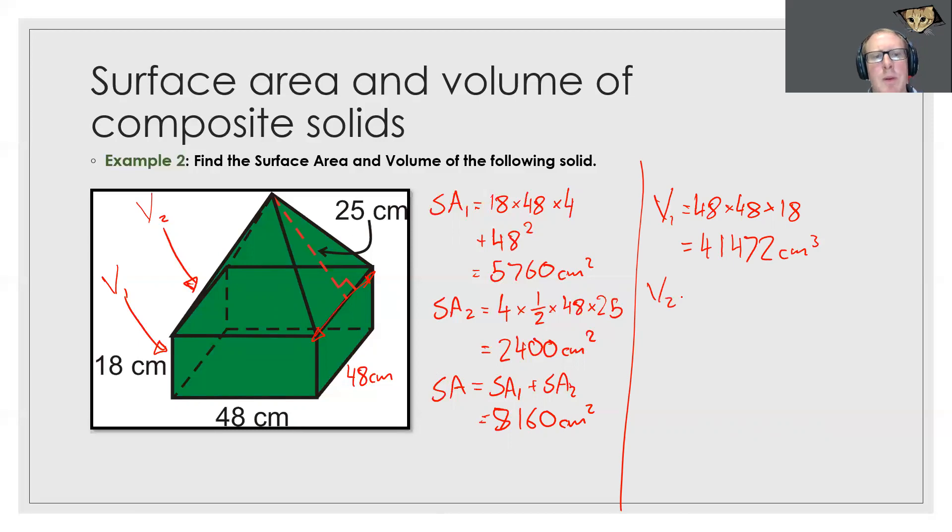Now my volume 2. We recall to find the volume of a pyramid we do ⅓ times the area at the bottom which would be 48 squared times my height. Now what is my height? It's not 28 or 25 because that's my slant height. We need to figure out this height here.